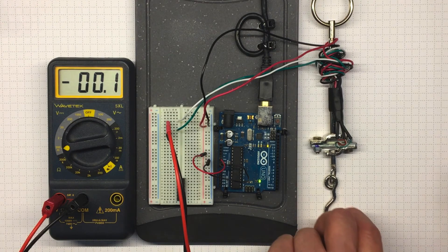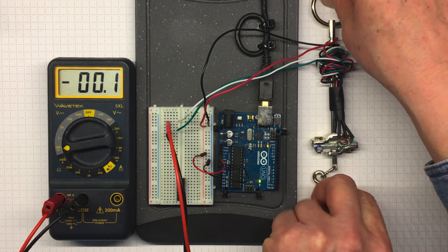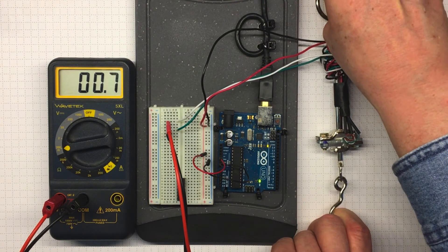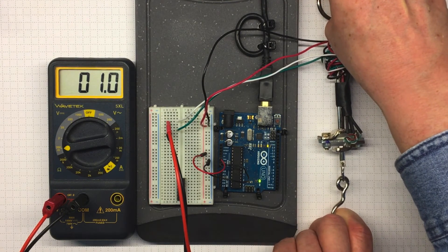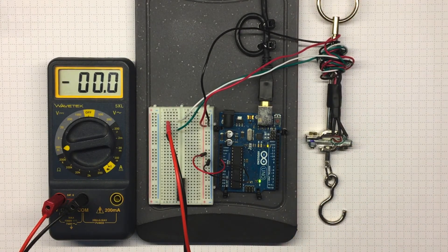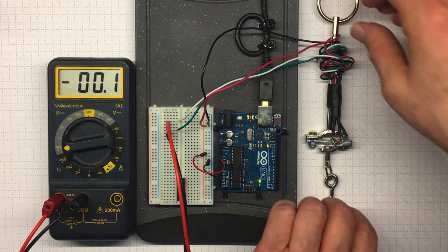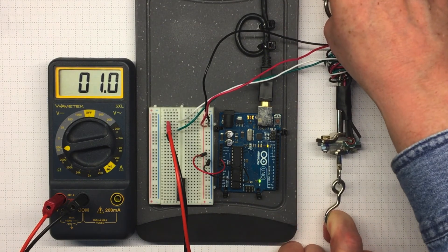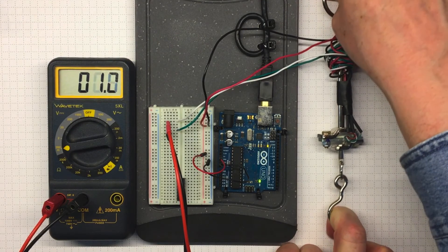And if I apply some tension on the load cell, then that voltage changes just a little bit. It gets up to about 1 millivolt with a fairly high tension on there from my fingers. So again, going up to about 1 millivolt.